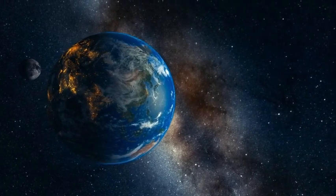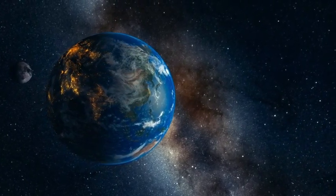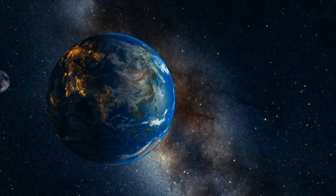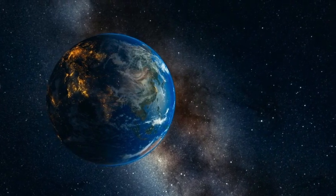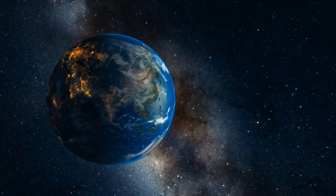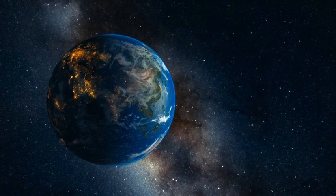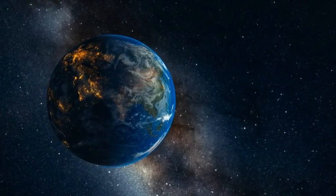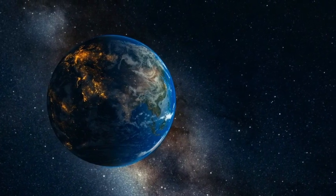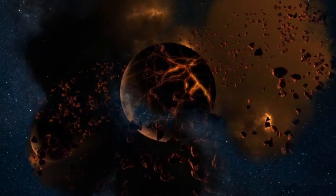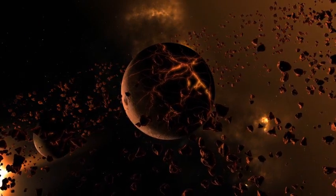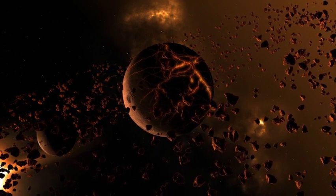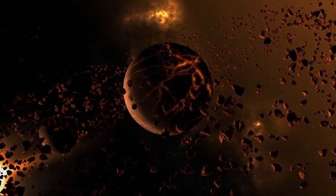Thirdly, the Earth's axis would become unstable. The moon helps to stabilize our planet's tilt at 23.5 degrees, which gives us seasons and moderate climate zones. Without the moon, the Earth's tilt could vary wildly from 0 to 45 degrees or more, depending on the gravitational influence of other planets, especially Jupiter. This would cause drastic changes in the climate and seasons, making some regions unbearably hot or cold or plunging them into perpetual darkness or daylight.